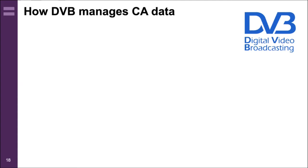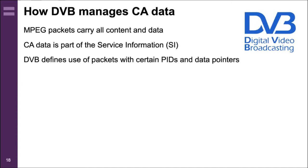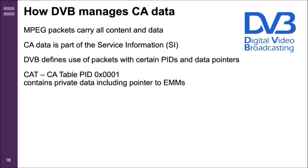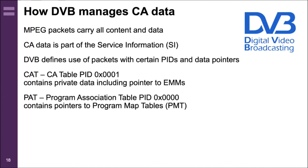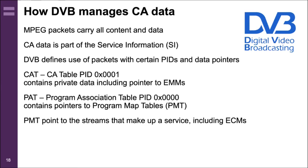Looking at how DVB manages CA data: DVB packets are MPEG packets carrying all content and data. The DVB standard defines packet IDs. The CA table is in a packet with packet ID hex 0001, and within that CA table there's private data including pointers to where EMMs can be found. The Program Association Table at address zero contains pointers to Program Map Tables, which point to the streams making up a service — typically a video stream, one or more audio streams for multiple languages, data streams for subtitles, and an ECM stream.